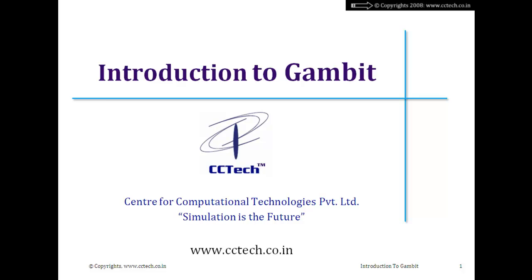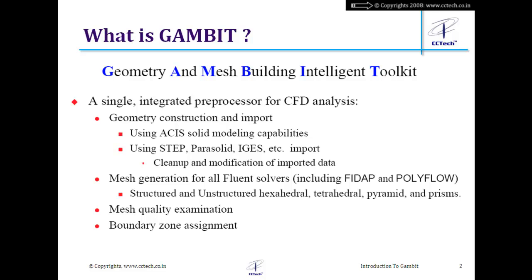GAMBIT stands for Geometry And Mesh Building Intelligent Toolkit. It is a single integrated pre-processor for CFD analysis. By single integrated pre-processor, I mean you can create the geometry — which is the first step in CFD analysis — creating the fluid domain or solid domain for heat transfer analysis.